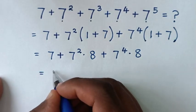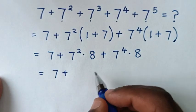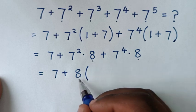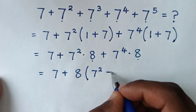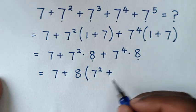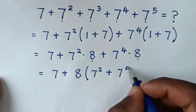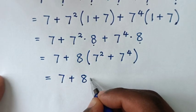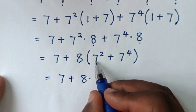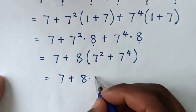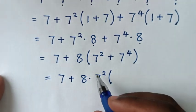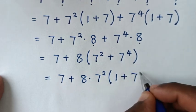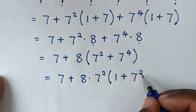Then it will be equal to 7, then plus — 8 is common, so we'll take 8 out of the bracket. Then 7 square times 8 divided by 8 is 7 square. Then it will be equal to 7 plus 7 plus 7, times 7 square plus 7 power 4 — 7 square is common, so we'll take 7 square out of the bracket. Then 7 plus 7 plus 7 power 4 divided by 7 power 2, because power 4 minus power 2 is power 2, bracket.